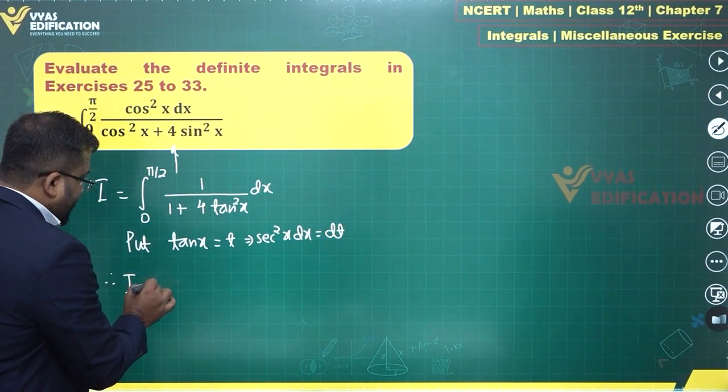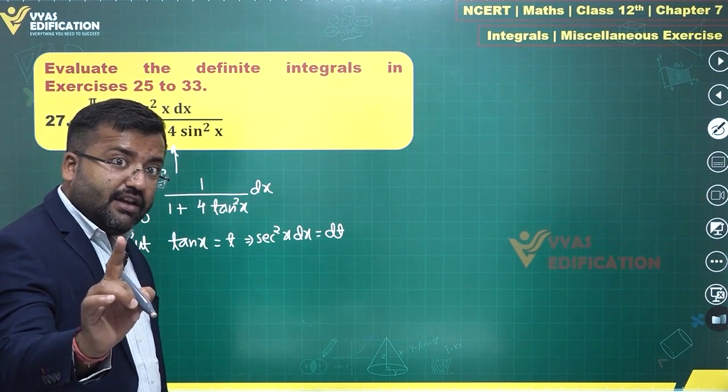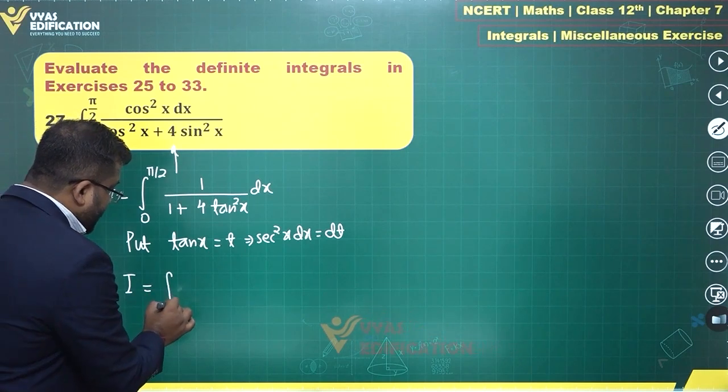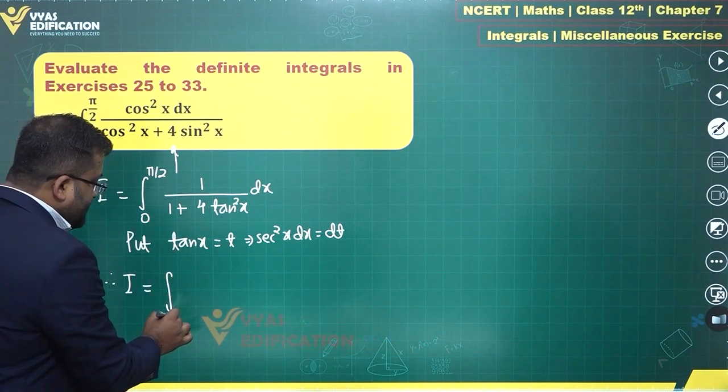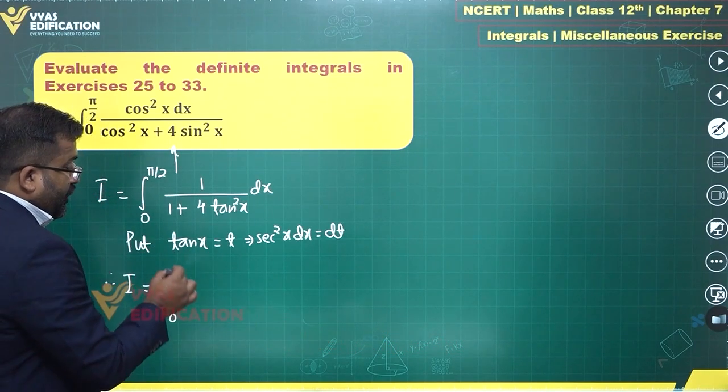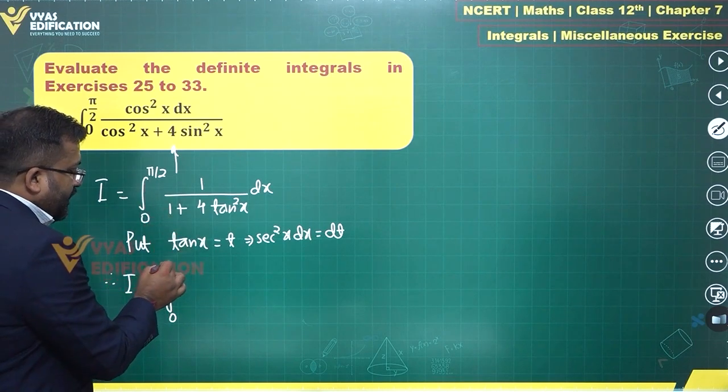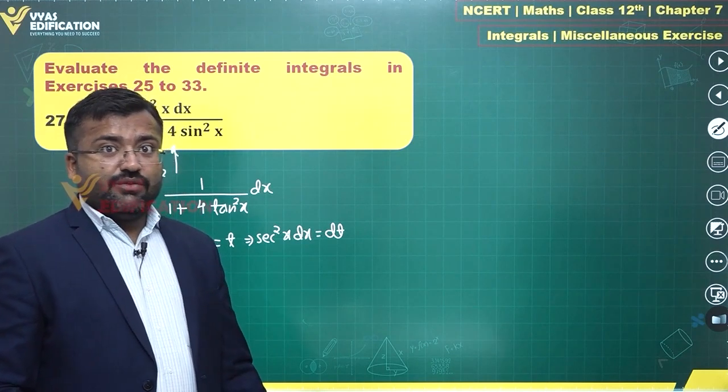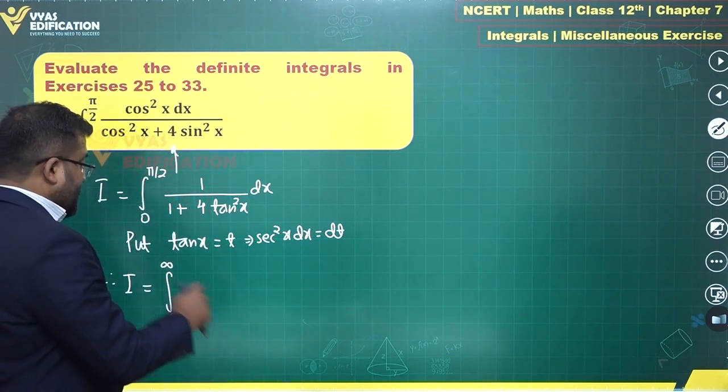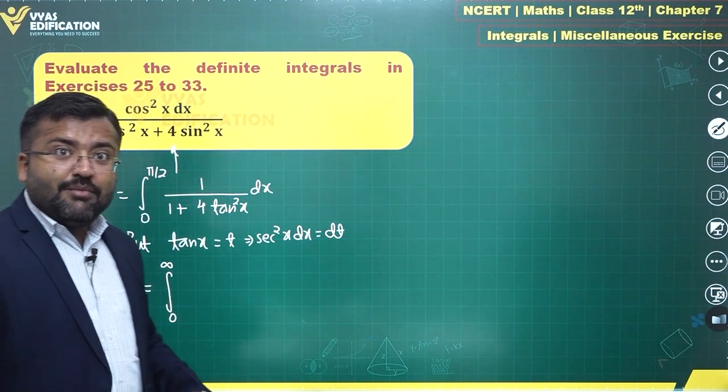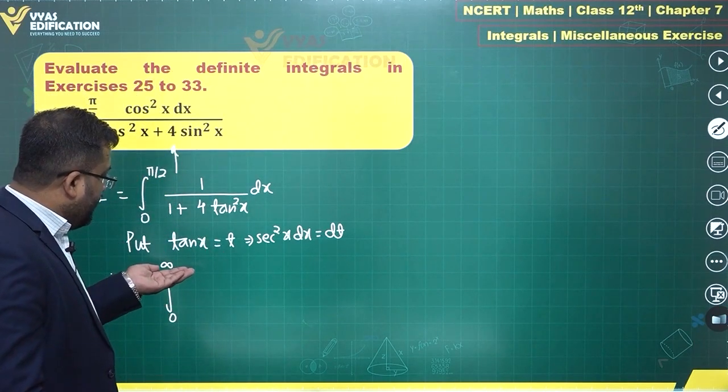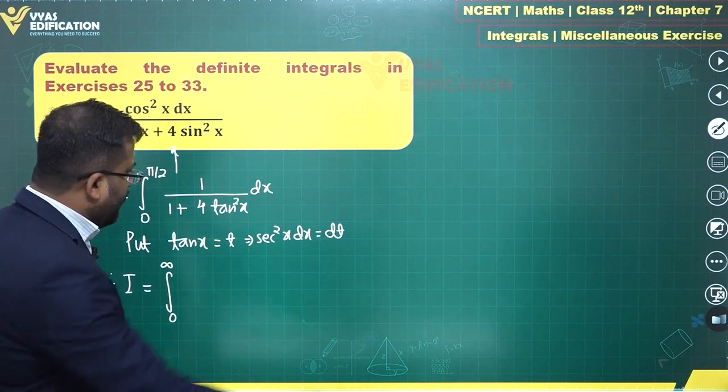Therefore, I now observe this carefully because this is dangerous territory. Integral, tan 0 is 0, the lower limit. Upper limit will be tan π/2, which is nothing but infinity. Yes, it is tending to infinity. This is important. Oh, and charity people have gone beyond this. They are giving you infinity over here. Let it be. What next?